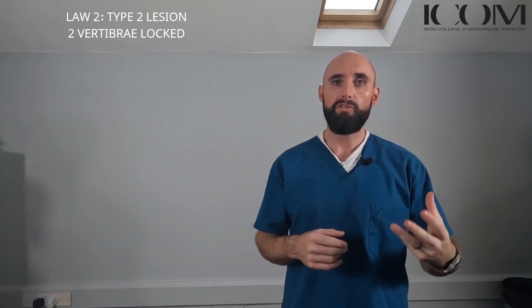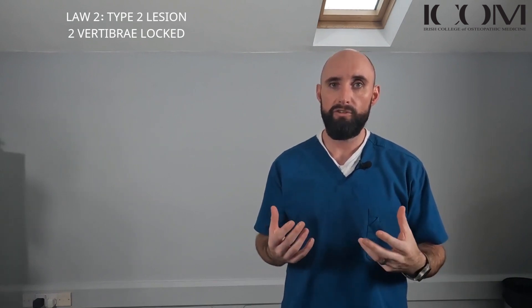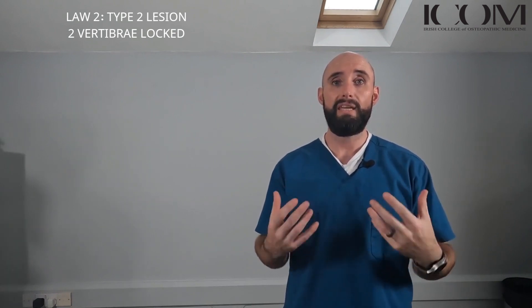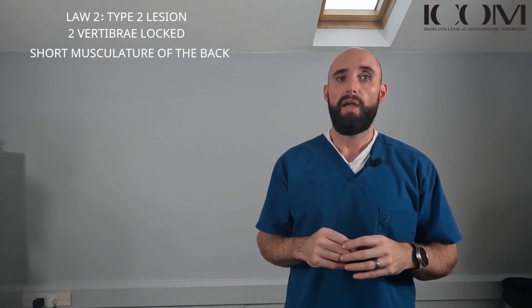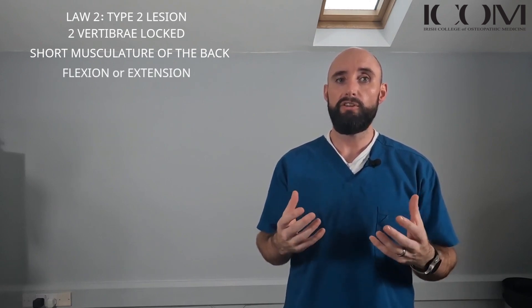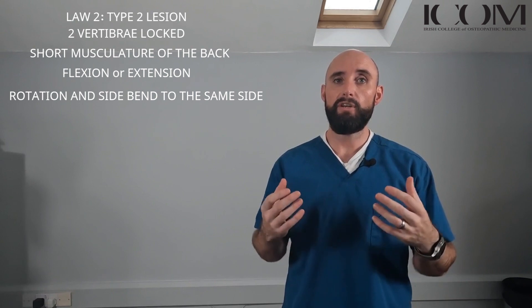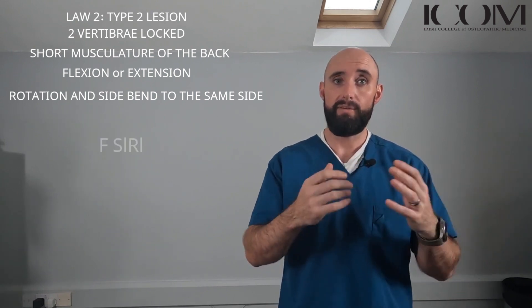In this section we're going to talk about the second Fryette's law, which is Type 2 somatic dysfunction. As always, we're talking about the ease of movement with somatic dysfunction — we're not talking about restriction, so the equations are written down in relation to the ease of movement. Type 2 somatic dysfunctions are generally maintained by the short musculature of the back.